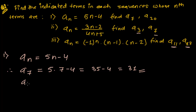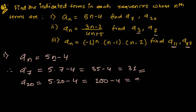Next is a20, the 20th term. Again, I'm just replacing n by 20. That gives 5 times 20 minus 4, which is 100 minus 4, that is 96. So we got the value of the 7th term and the 20th term of this sequence whose nth term was 5n-4.